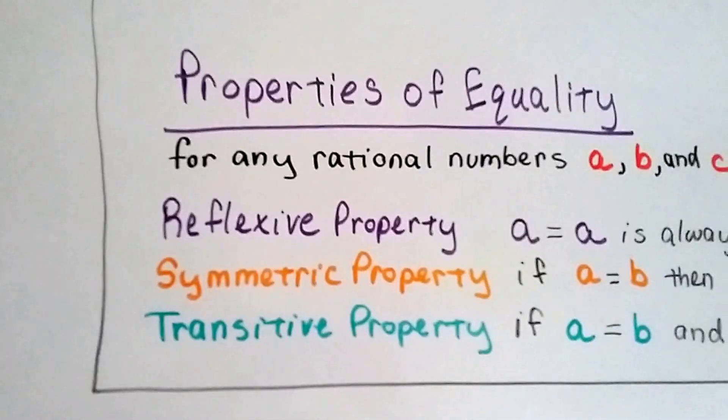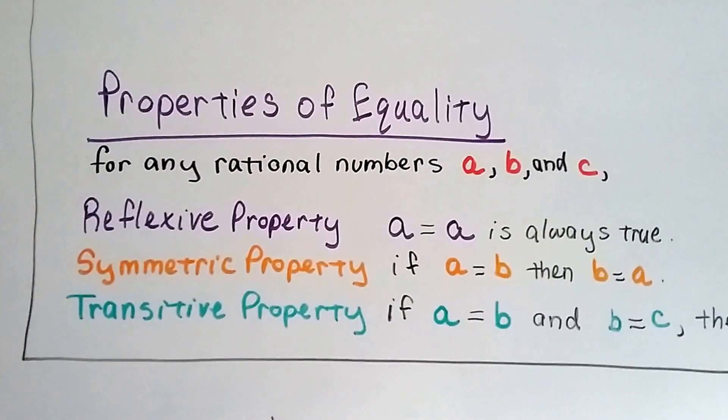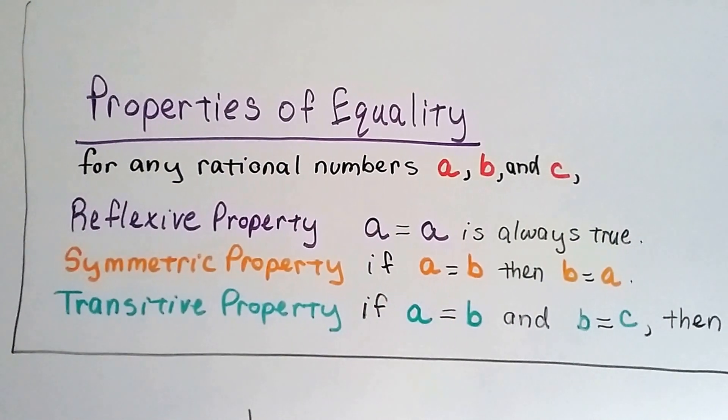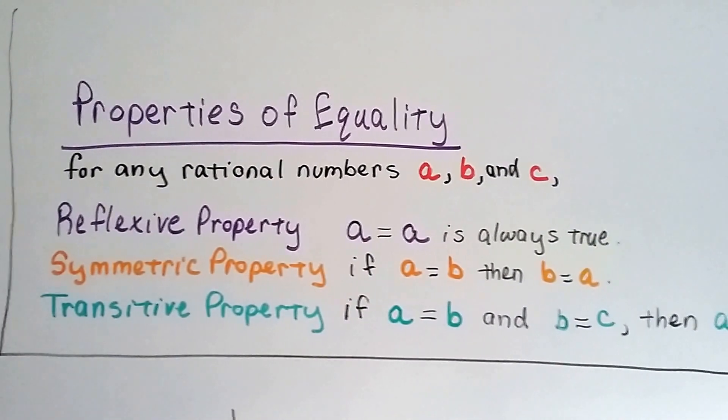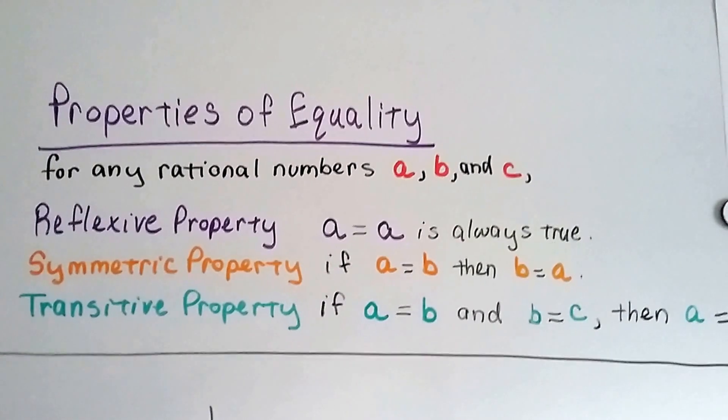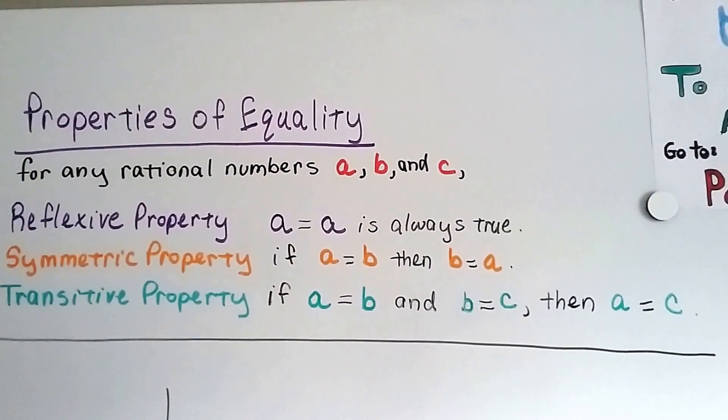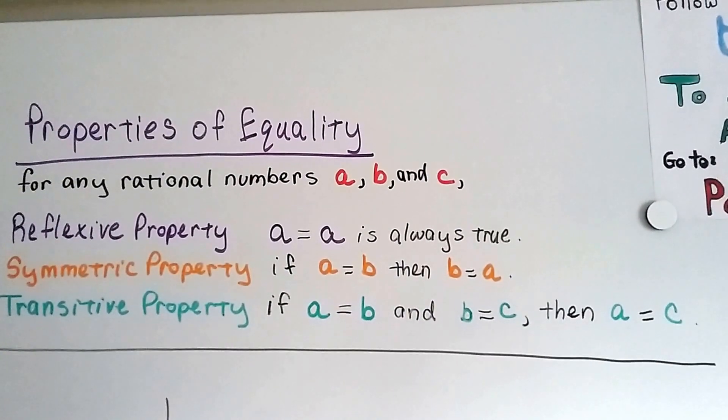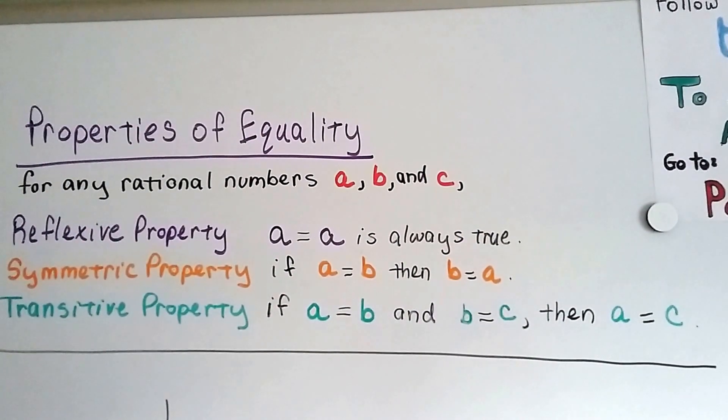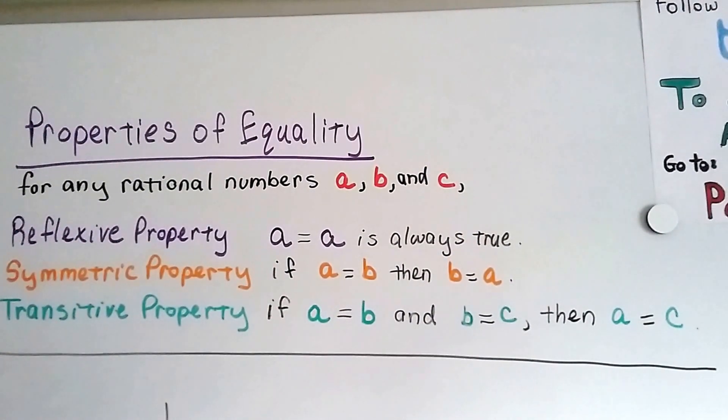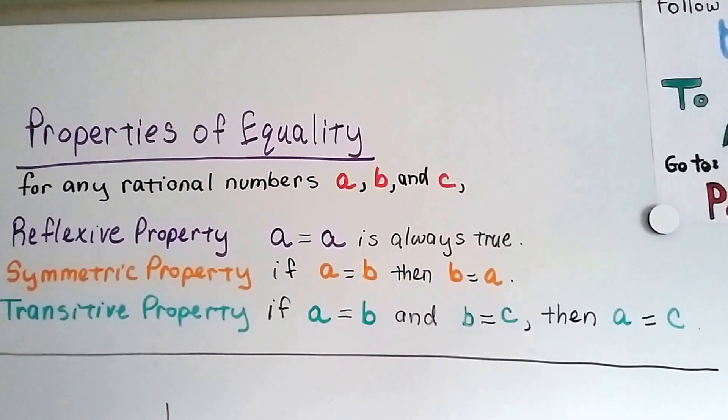The properties of equality, here's the formal definition for any rational numbers a, b, and c. The reflexive property says a equals a is always true. The symmetric property says if a equals b, then b equals a. And the transitive property says if a equals b and b equals c, then a equals c.